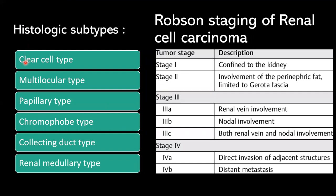Histologically, RCC is divided into 6 types: clear cell type, which is the most common; multilocular type; papillary type; chromophobe type; collecting duct type; and renal medullary type.